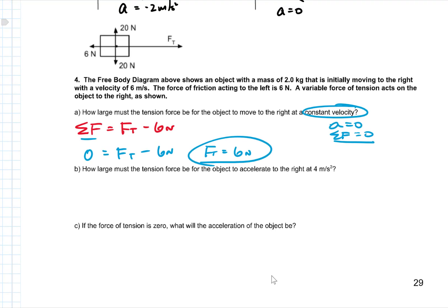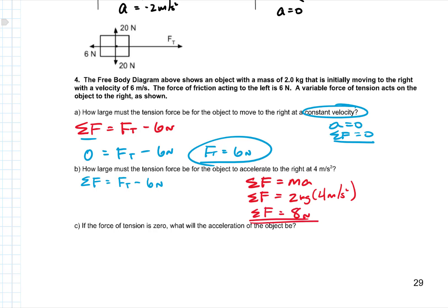Part B: how big must tension be to accelerate to the right at 4 meters per second squared? Net force equation is still tension minus 6 newtons, but since we're accelerating, net force is mass times acceleration: 2 kilograms times 4 meters per second squared equals 8 newtons. So 8 equals tension minus 6. Adding 6 to both sides, the tension force comes out to be 14 newtons.